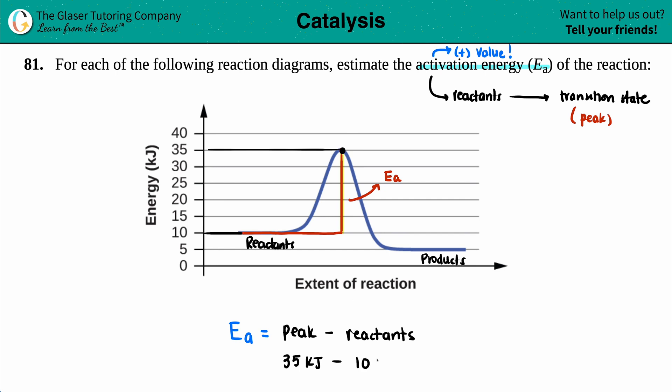So all we got to do here is just do 35 minus 10, right? The higher number over the lower number. So in this case, the activation energy, the energy needed to get over that hump from where you started from, is 25, 25 kilojoules. And that is the final answer.